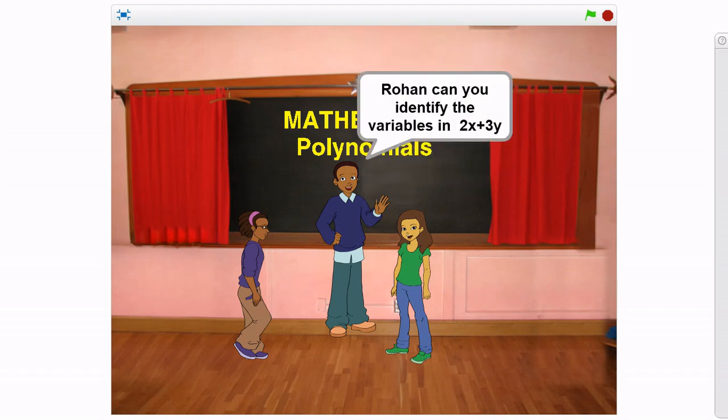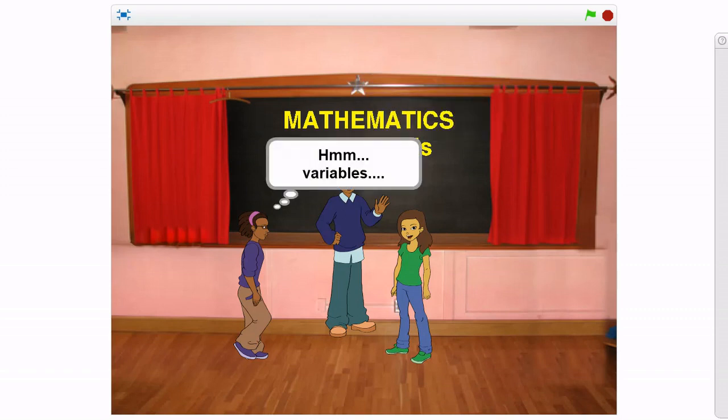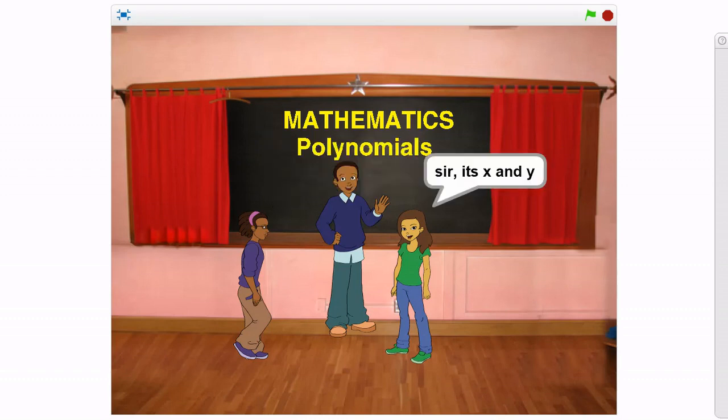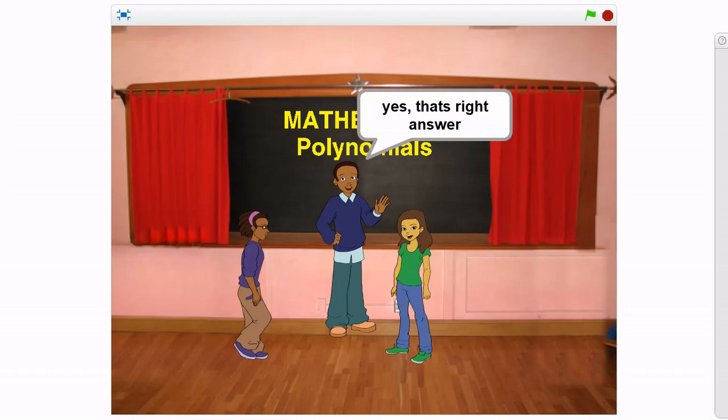Rohan, can you identify the variables in 2x plus 3y? Hmm, variables? Sir, it's x and y. Yes, that's the right answer.